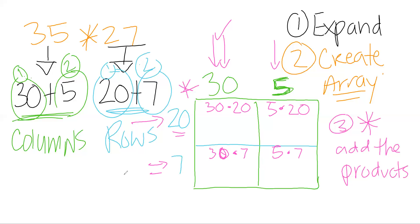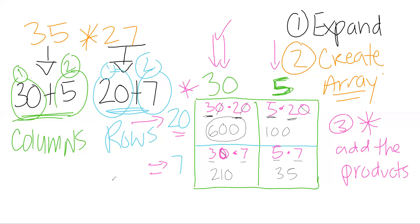Now I go through and solve these four multiplication problems. This is base-10 multiplication — looking at the non-zero digits first. 3 times 2 is 6, with two zeros, so 600. 5 times 2 is 10 with one zero, so 100. 3 times 7 is 21 with one zero, so 210. And 3 times 5 is 35. Now we add all four products together.